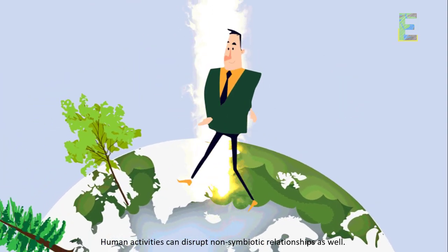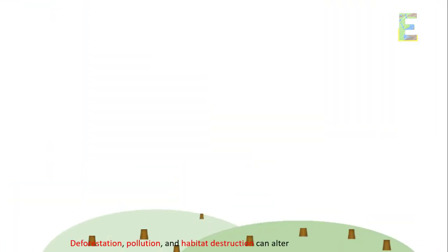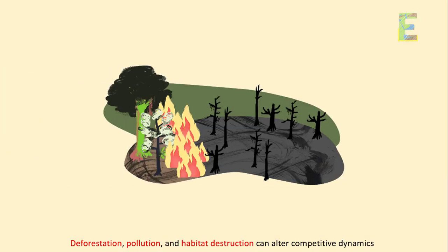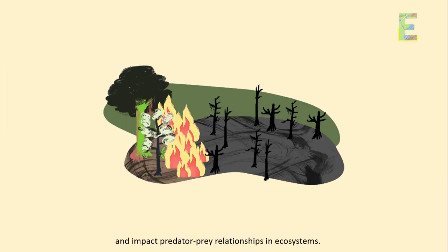Human impact. Human activities can disrupt non-symbiotic relationships as well. Deforestation, pollution, and habitat destruction can alter competitive dynamics and impact predator-prey relationships in ecosystems.